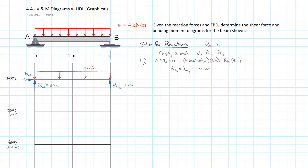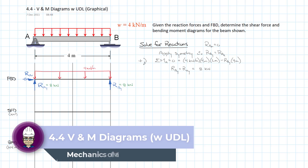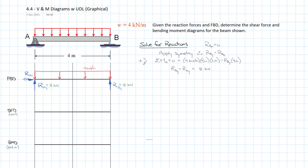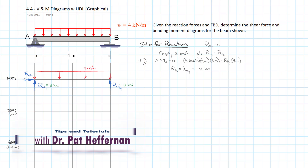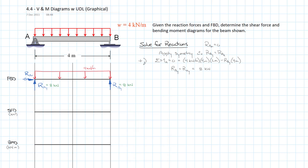We've been looking at shear force and bending moment diagrams in beams, and specifically we've done a couple of videos now on point loads. Now what I want to do is introduce the uniformly distributed load, because it's going to add a degree of complexity in the shear force and bending moment diagram generation using the graphical method. It's still very doable — we're using exactly the same relationships, it just raises everything up by an order.